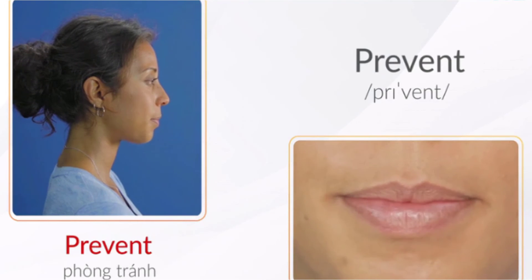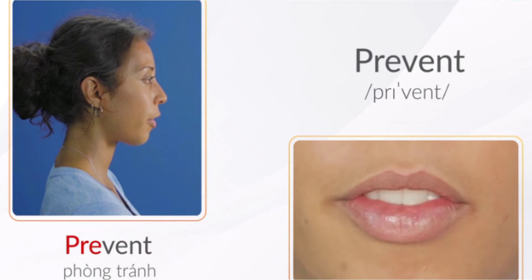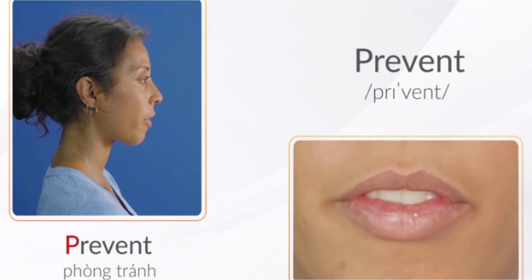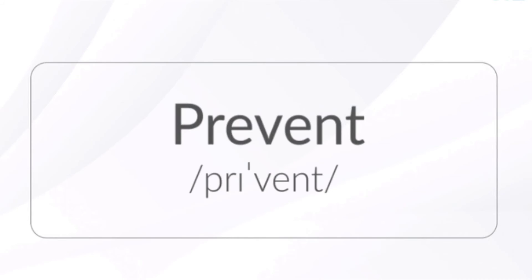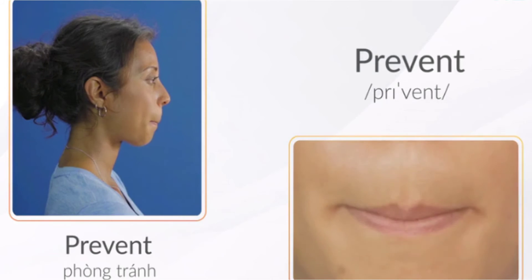Prevent. Các bạn lưu ý từ này có 2 âm tiết, trọng âm rơi vào âm tiết thứ 2 nhé. Từ này đồng thời có chữ phụ âm liên tiếp P và R, các bạn đọc nối với nhau nhé. Các bạn cũng đừng quên từ này kết thúc bằng âm T là 1 phụ âm vô thanh, chúng ta bật rõ ràng và dứt khoát nhé.